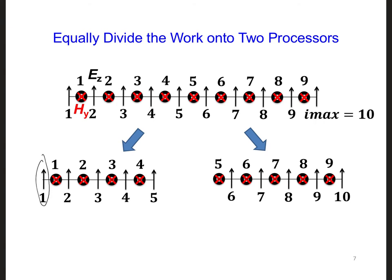That's true even for an unparallelized code. But now we also can't perform a regular update on the last EZ component on processor 0, which is EZ5.